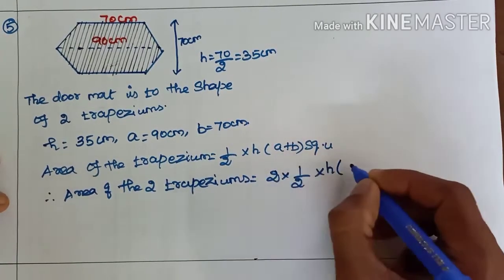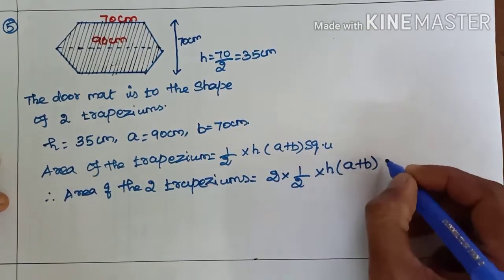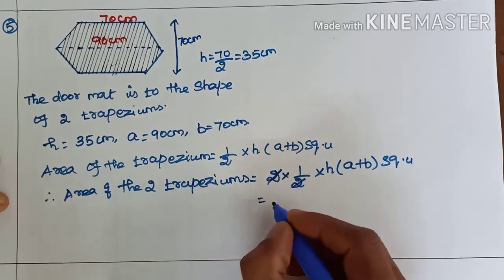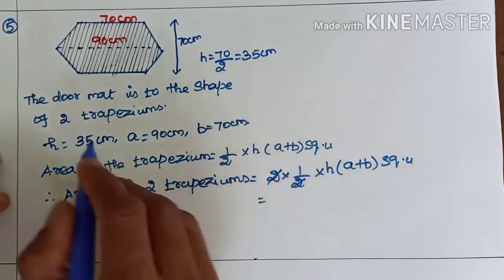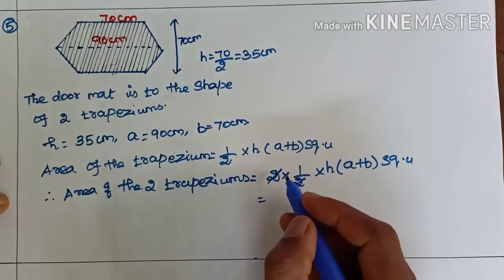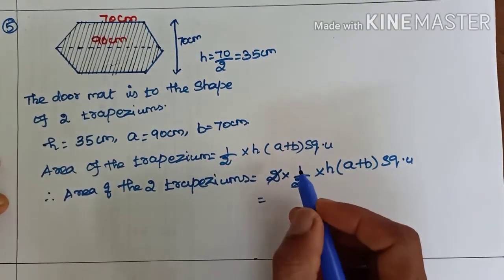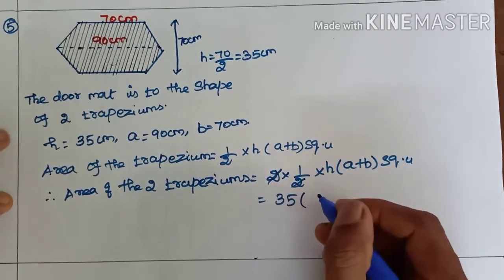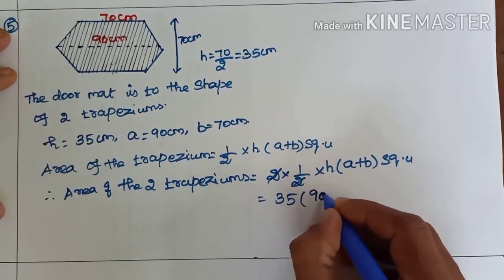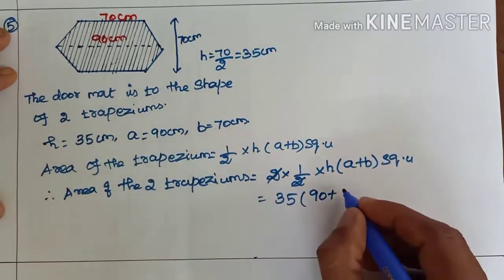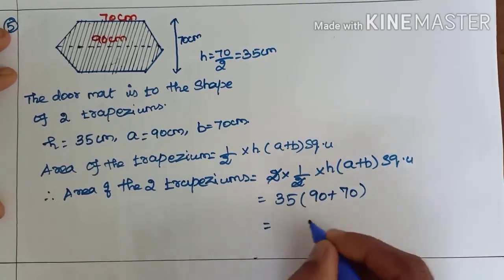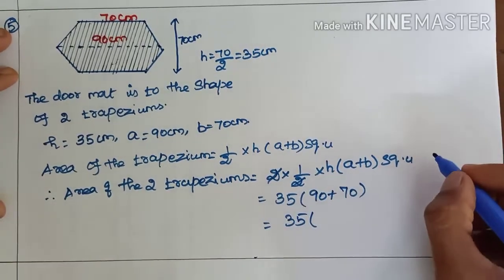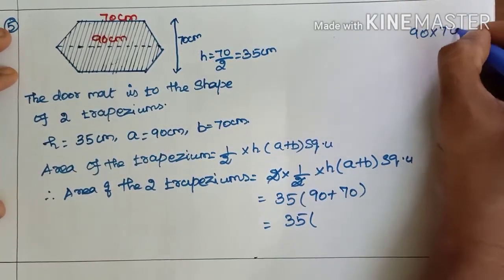Area of the trapezium = ½ × H × (A + B) square units. 2 and 2 cancel. Height is equal to 35, A is equal to 90, B is equal to 70. So: 35 × (90 + 70) = 35 × 160.